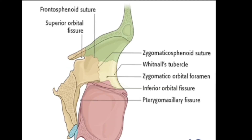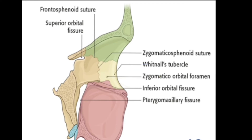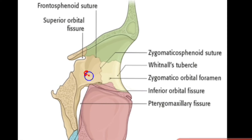The lateral wall is triangular in shape and formed by two bones: the zygomatic bone and the sphenoidal bone — specifically the greater wing of the sphenoid. On the posterior aspect of the lateral wall there is a small projection called the spina recti lateralis, which gives origin to part of the lateral rectus muscle.